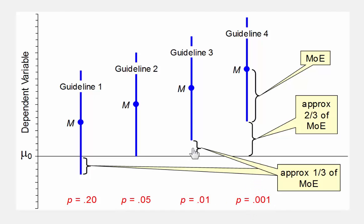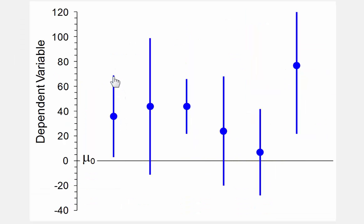Remembering these four graphics and these four guidelines allows us to read off from any 95% confidence interval and any null hypothesized value an approximate p-value. Here's a bit of practice. So these are all 95% confidence intervals, and here is our null hypothesis value. Let's eyeball what the p-value is. Here we know the null hypothesis value is beyond the interval, so p is a bit less than 0.05 — maybe it's around 0.03, something like that. In fact, it is.